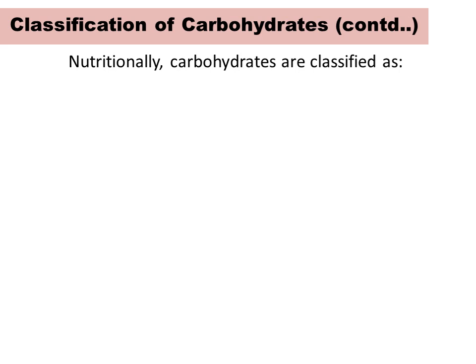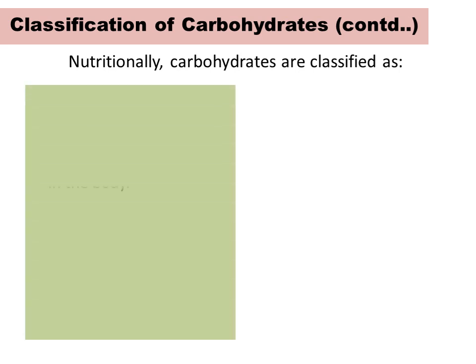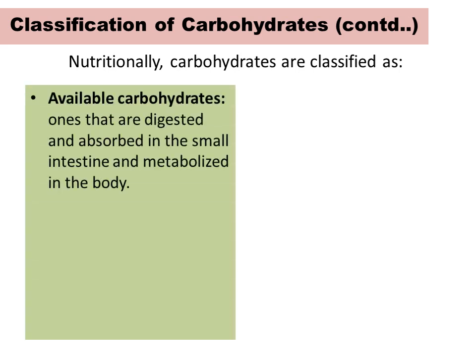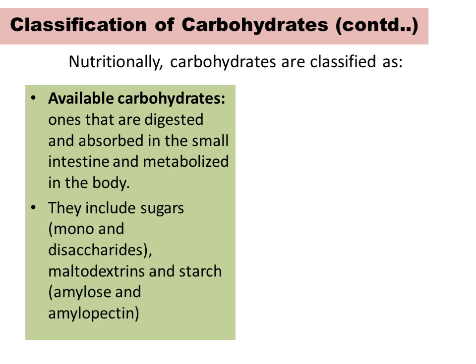But nutritionally, carbohydrates are classified as available and resistant carbohydrates. Available carbohydrates are the ones that are digested and absorbed in the small intestine and metabolized in the body, like sugars, maltodextrin, and starch.